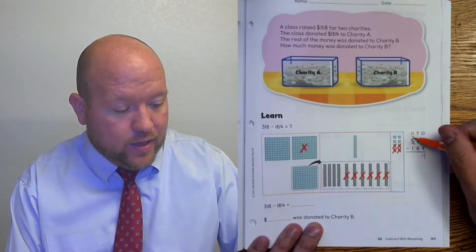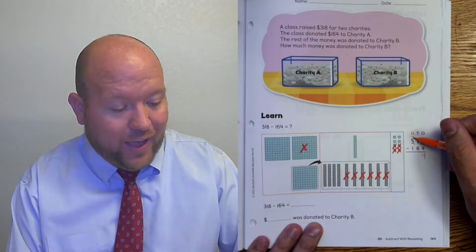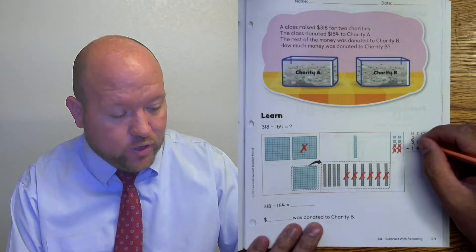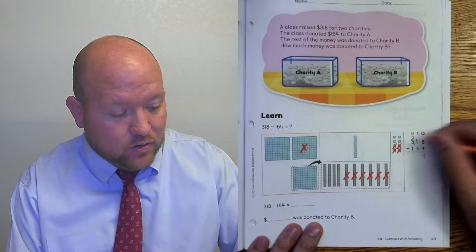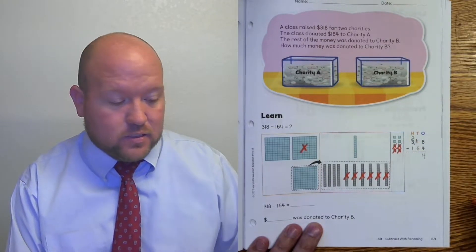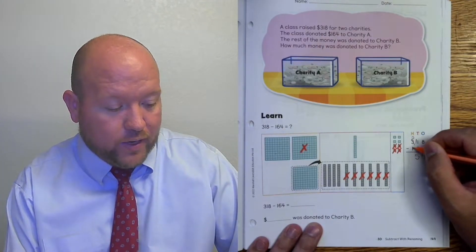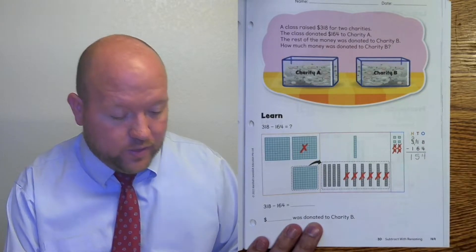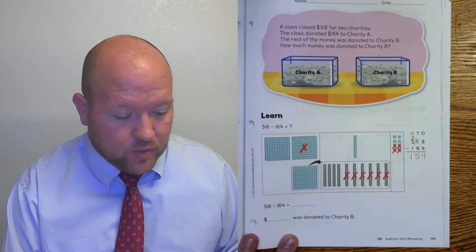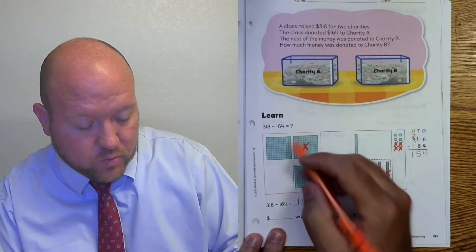And then we are going to have to add that 10 tens like that. So now we have 11 tens. 11 minus 6 is 5 and 2 minus 1 is 1. And so the answer is 154. And that's what we see here.